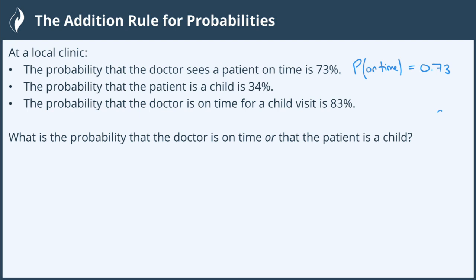I'm going to write things as I read them. The probability that the patient is a child is 34%. So the probability that the patient is a child is 34%. And hopefully you guys are good with this notation, right? P of, this is like P of child. So probability that it's a child.